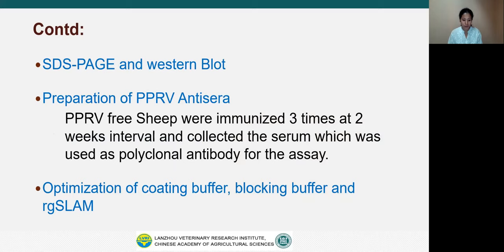The recombinant expressed protein was analyzed by SDS-PAGE and Western blot, and then PPRV antiserum was prepared. For preparing PPRV antiserum, we immunized PPRV-free goats three times at two-week intervals, and the serum was collected, which was used as polyclonal antibody for the assay. After preparing all these necessary components for ELISA, we started to optimize the coating buffer, blocking buffer and recombinant SLAM concentration.